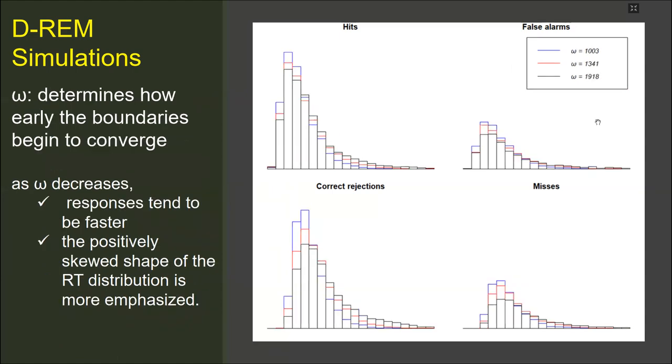In simulations, the omega value was changed between three levels. These values are prospective time steps in which the proportion of active item features reached to 70%, 80%, and 90%, respectively. This was done to discover whether there is an optimal percentage to be fixed in order to eliminate this parameter. The simulations demonstrated that as omega decreased, responses tend to be faster, and the positive skewed shape of the response time distribution is more emphasized. The optimization of this parameter and the boundary convergence rule is still ongoing.